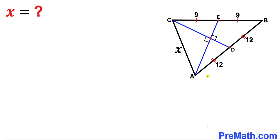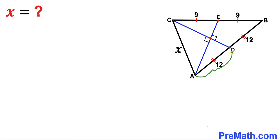Welcome to pre-math. In this video we have triangle ABC such that D and E are the midpoints on the side lengths AB and BC respectively. Line segment CE is 9 and line segment EB is 9 units as well, whereas line segment AD is 12 and line segment DB is 12 as well. Moreover, these blue lines CD and AE intersect each other at 90 degrees. Our task is to find the value of this side length X.